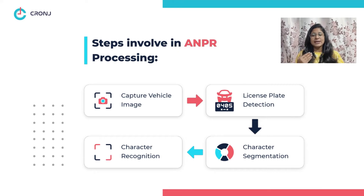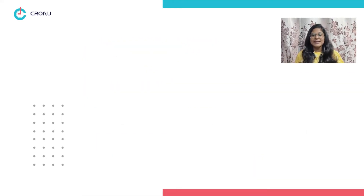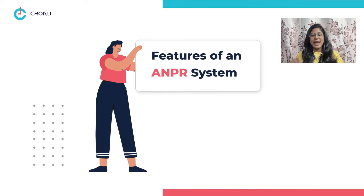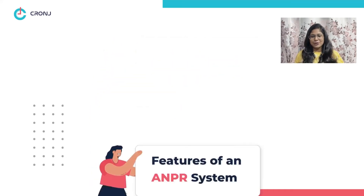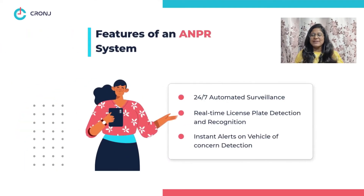If the system finds a match from its database, it forwards an action to the gate, allowing it to enable vehicles to hold or pass. The ANPR system also has some amazing features that you simply can't ignore. Feature 1: 24/7 automatic surveillance. Feature 2: real-time license plate detection and recognition. Feature 3: instant alerts on vehicle of concern detection.